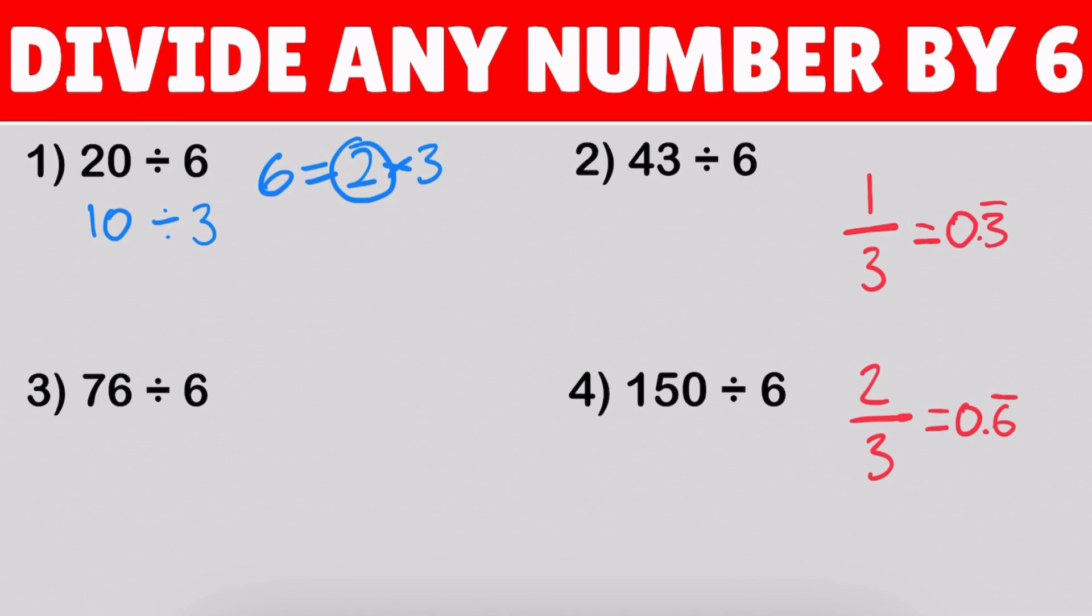Now, the second step is just to divide 10 by 3. And, when we do this, we are left with 3. And then, because 3 times 3 is 9, we are left with a remainder of 1. 9 plus 1 is 10, which is what we were looking for.